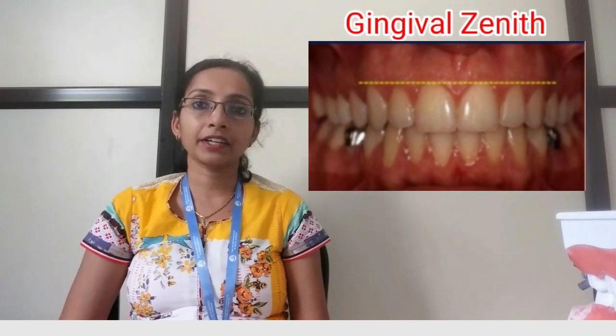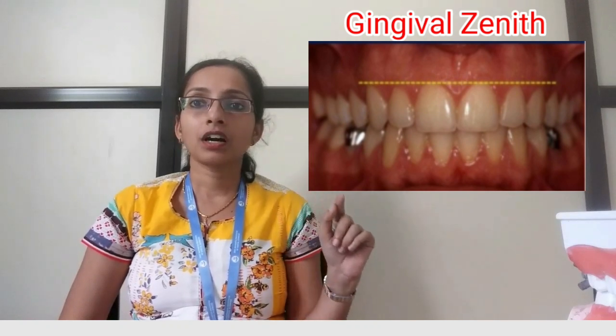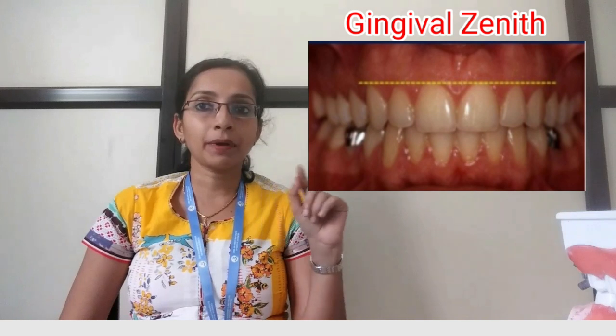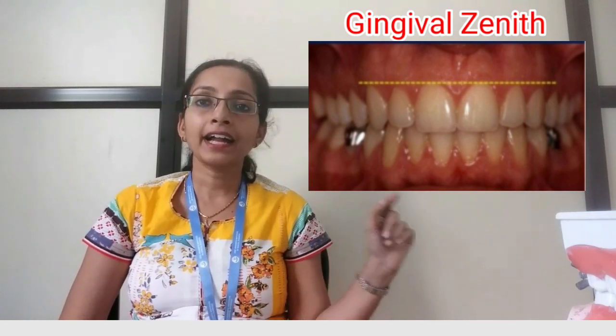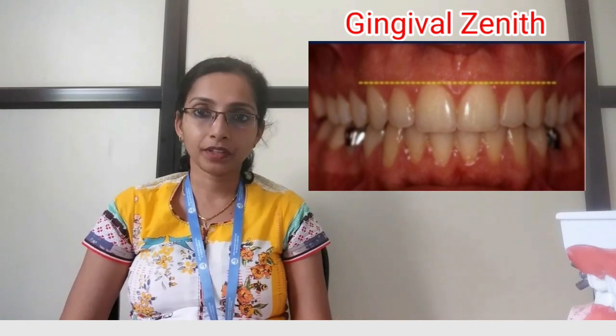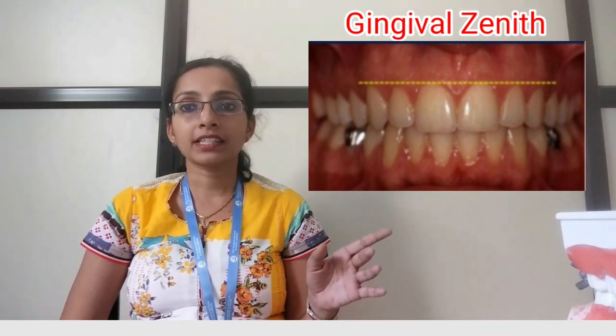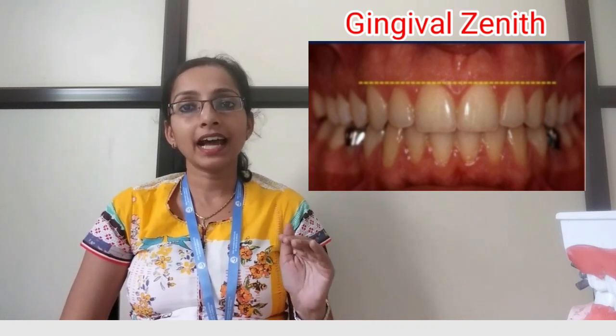Next is the gingival zenith. As you can see in this diagram, the most apical portion of the marginal gingiva of the central incisors and canines should be in the same line, whereas the lateral incisor gingival zenith should be around 1 mm below it.